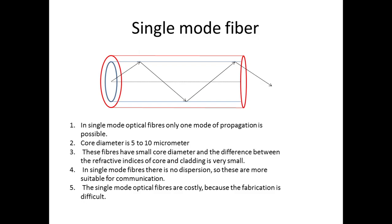On the basis of number of modes, fibers are divided into two types: single mode fiber and multimode fiber. In single mode optical fibers, only one mode of propagation is possible, so the core diameter is very small — about 5 to 10 micrometers. This fiber has a small core diameter and the difference between the refractive indices of core and cladding is very small.